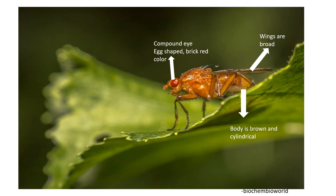The characteristics used to distinguish a wild-type fly: a wild vinegar fly, or fruit fly, basically has a compound eye. It is egg-shaped and the color of the eye is brick red. The wings are broad, the body is usually brown and it is cylindrical in shape.